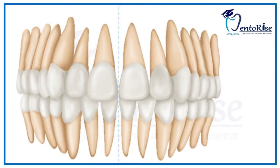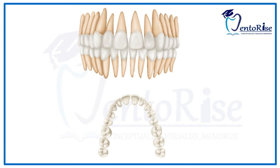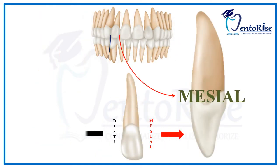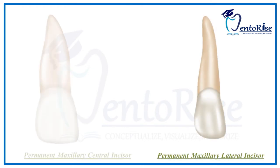The permanent maxillary lateral incisors are 2 in number. According to the FDI tooth notation system, the right permanent maxillary lateral incisor is numbered as 12 and the left permanent maxillary lateral incisor is numbered as 22. We will be discussing the permanent maxillary lateral incisor under 5 headings: the labial aspect, the lingual aspect, the mesial aspect, the distal aspect, and the incisal aspect. Our approach will be to establish a direct comparison between the anatomy of a lateral incisor and that of the central incisor.